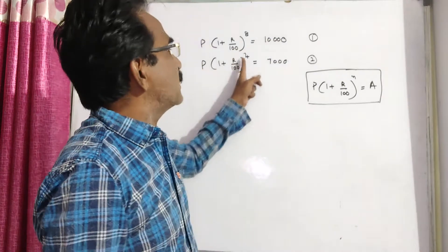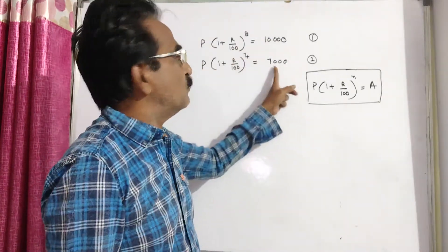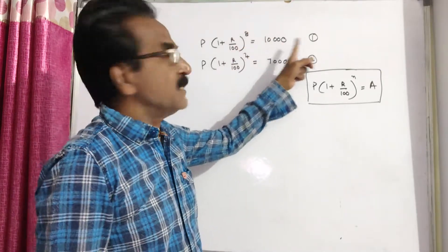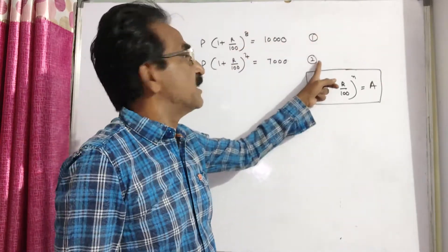So, P into 1 plus r by 100 whole power 4 is equal to 7,000. P into 1 plus r by 100 whole power 8 is equal to 10,000. This is equation 1, this is equation 2.